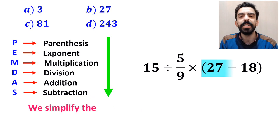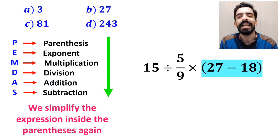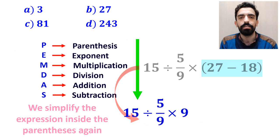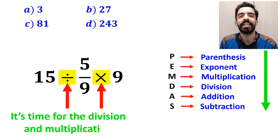And the next step, we simplify the expression inside the parenthesis again. And instead of this expression, we can write 15 divided by 5 over 9 times 9. Now it's time for the division and multiplication.